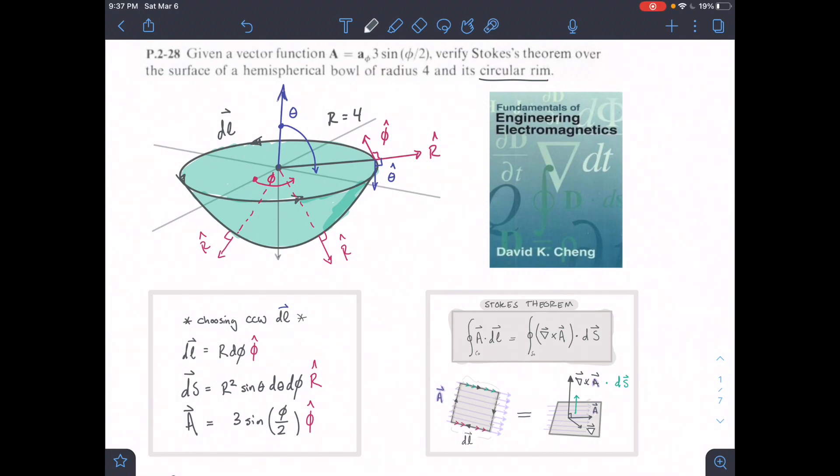Alright, so this is the last one from the series of divergence and Stokes' theorem problems. This problem has a vector function, and we're asked to verify Stokes' theorem over the surface of a hemispherical bowl with a radius of 4 and a circular rim.